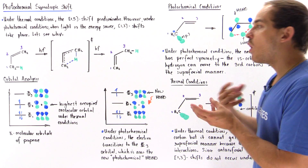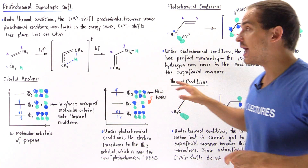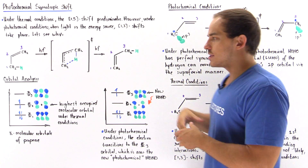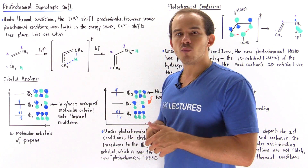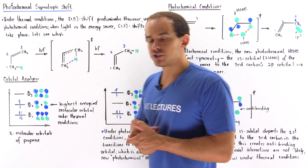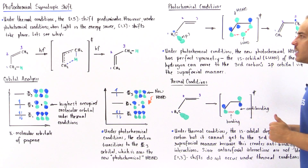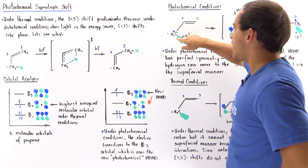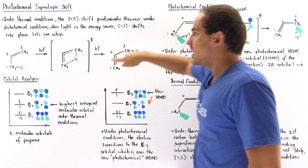So let's see why this reaction actually takes place under photochemical conditions by examining the interaction between the HOMO and the LUMO within the transition state. On the reactant side we have carbon 1, carbon 2, and carbon 3.